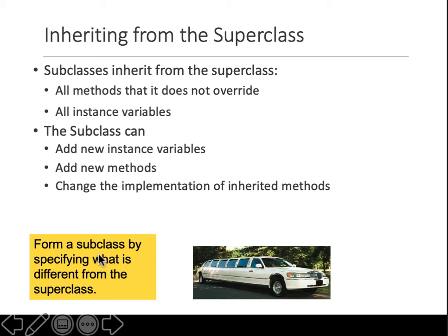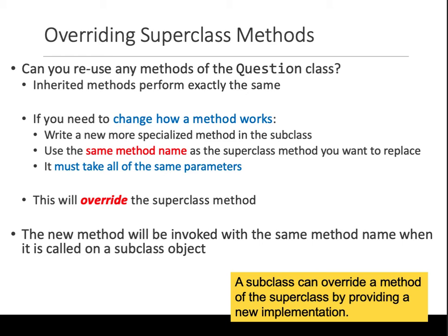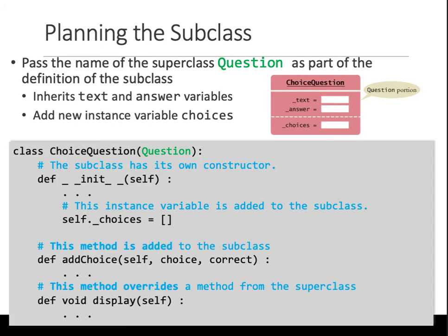In the subclass, you have to specify what is different — like what kind of additional variables are being defined. Inherited methods perform exactly the same as in the parent class. But if you change how a method works, you can use the same name, and it must take all of the same parameters. This will override the method — that is the display example.